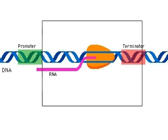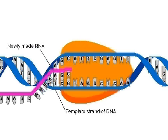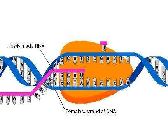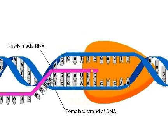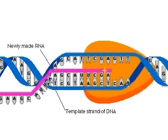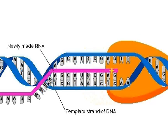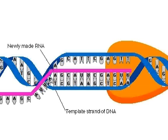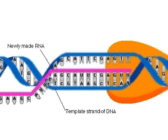Here's a close-up view of elongation. RNA nucleotides pair up with their complementary DNA bases on the template strand. Note that U in RNA pairs with A in DNA. RNA polymerase moves along the DNA strand, linking nucleotides to the end of the RNA strand.